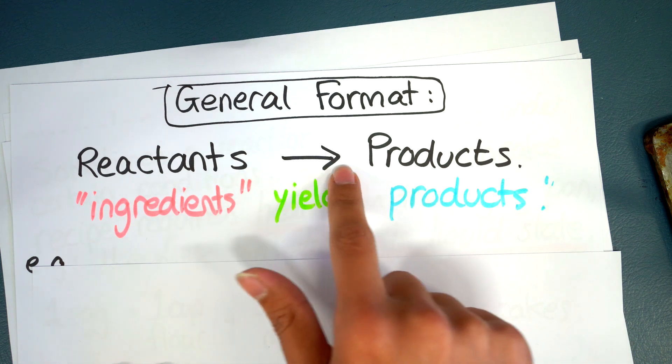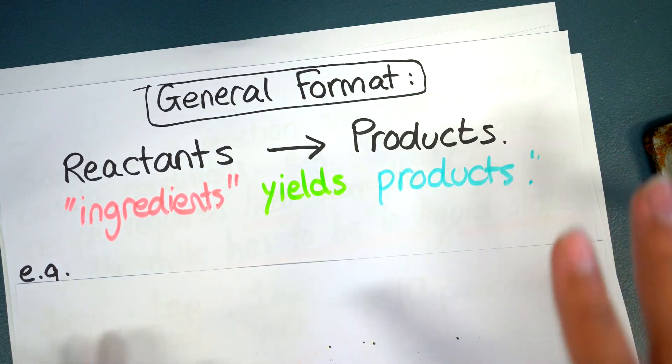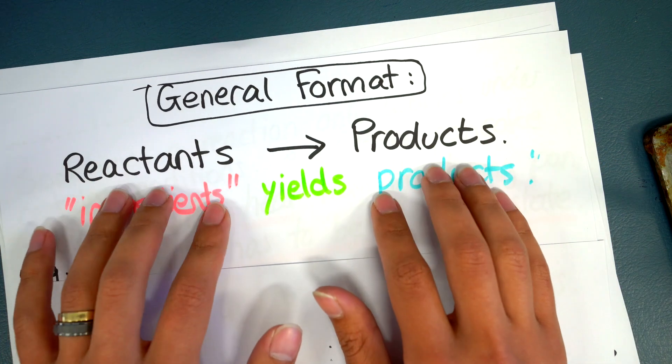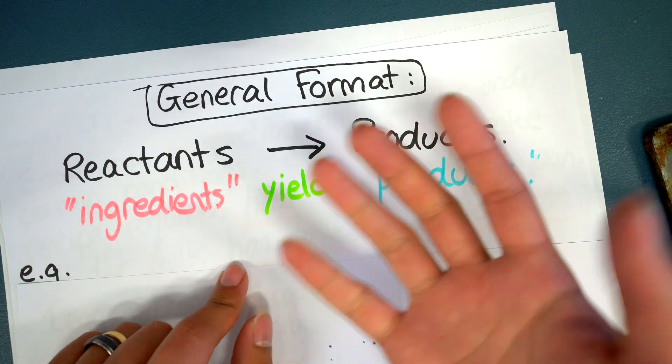Now this arrow sign people sometimes say equals but that is incorrect. The arrow sign does not mean that both sides are equivalent. What the arrow sign indicates is which direction does the chemical change occur.